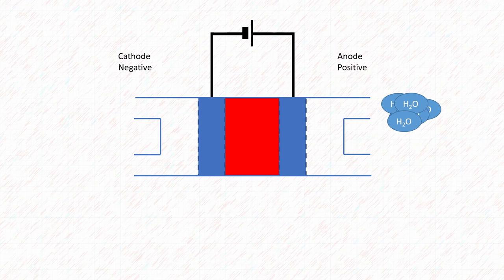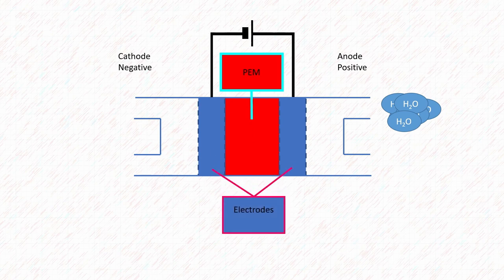Looking at the fuel cell in diagrammatic form we have in the middle this polymer electrolyte membrane surrounded by the electrodes and on either side the anode and cathodes. When we start, water enters through the anode and here when it reaches the cathode and anode things start to happen.